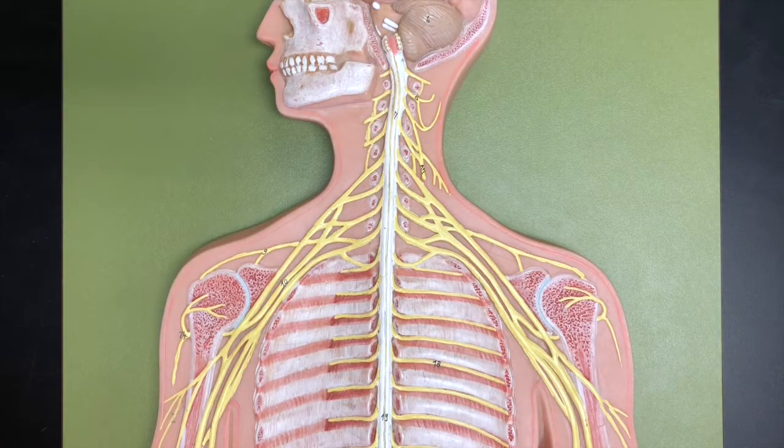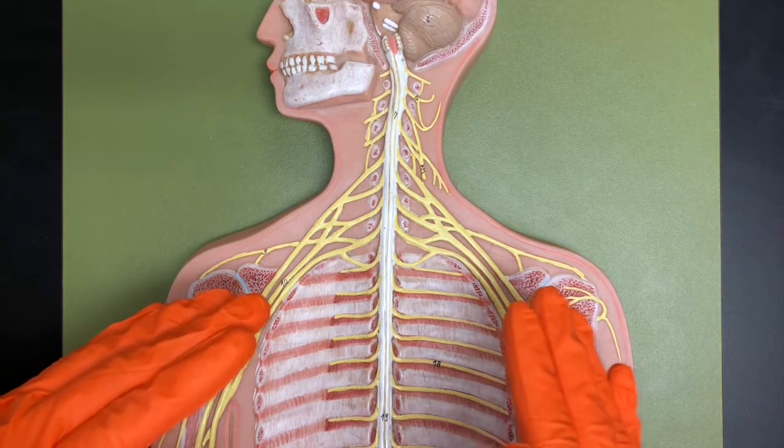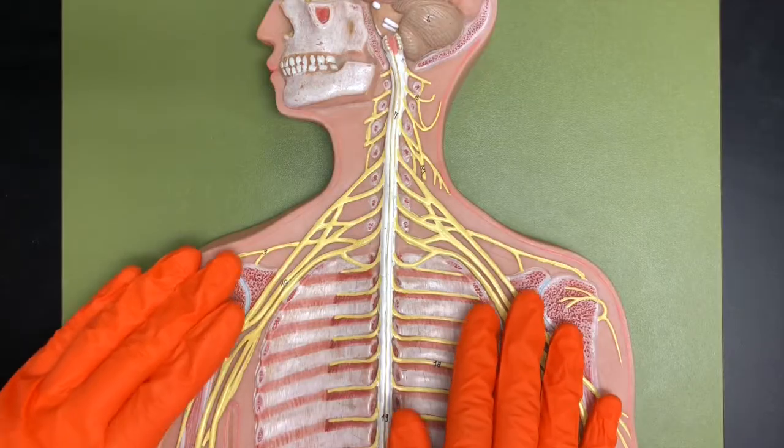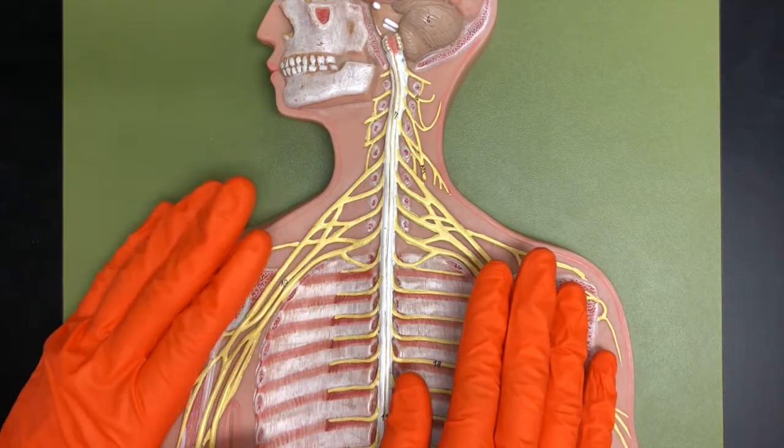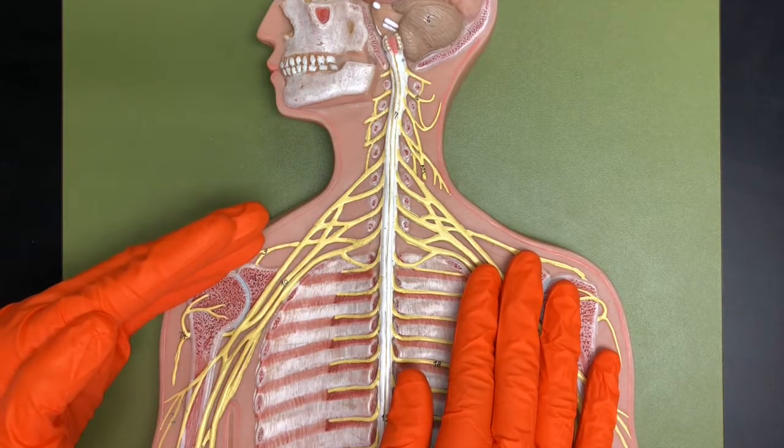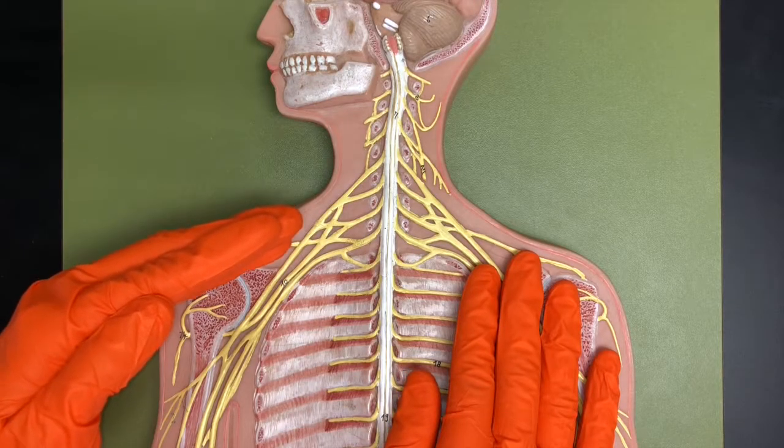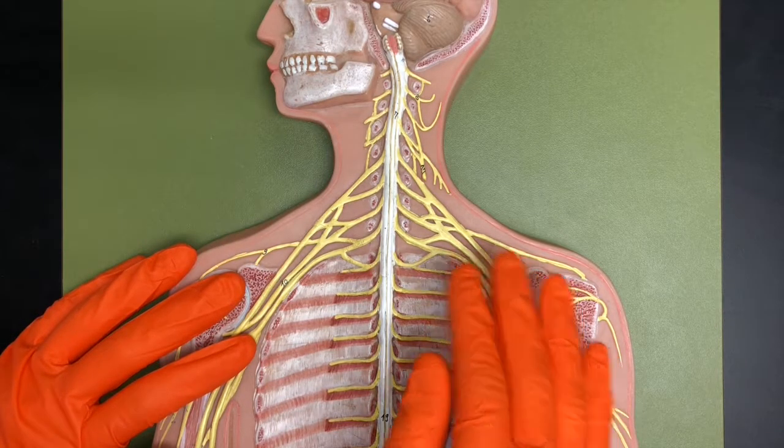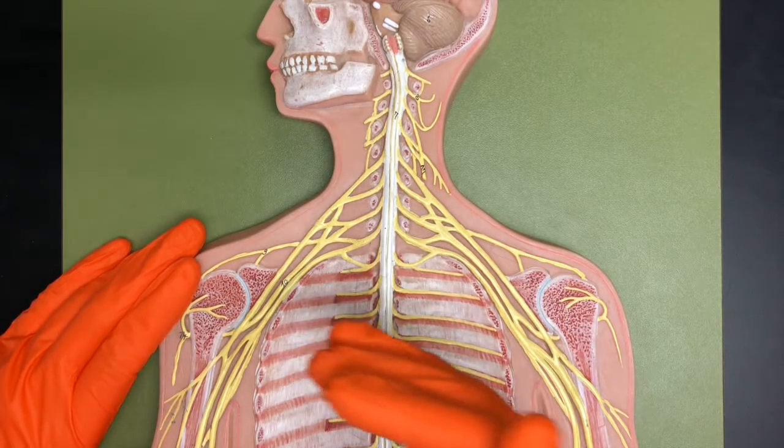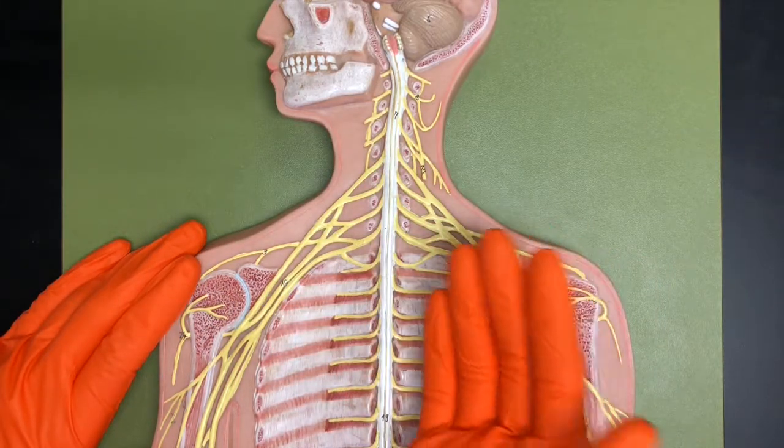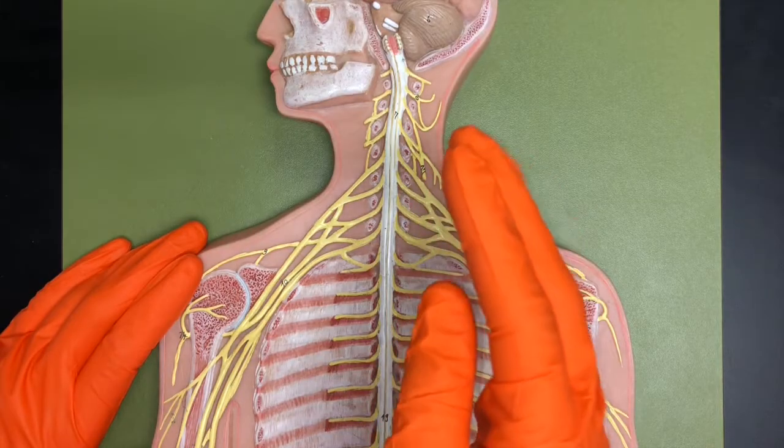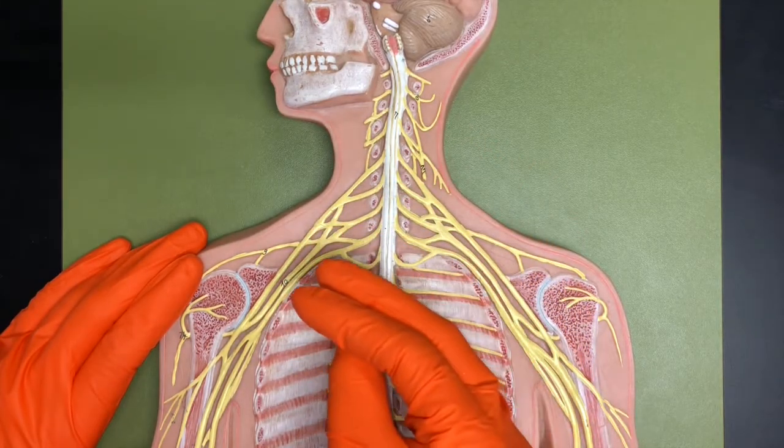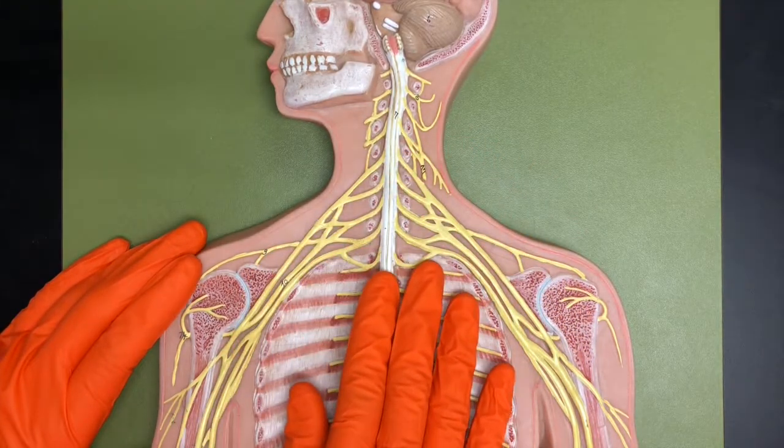Then we have the brachial plexus. And the brachial plexus is going to come from the anterior rami of levels C5 through T1. We have further divisions or organizational levels, I should say, that go into trunks, divisions, cords, and then what are known as terminal branches.